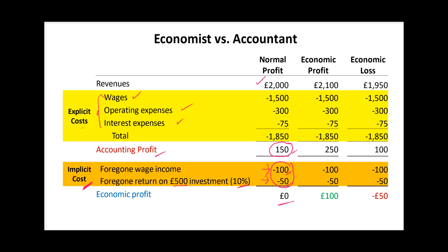An economic profit of zero doesn't mean no profit. It simply means that the accounting profit is covering their opportunity costs — their forgone earnings. It's just enough to stay in business. When economic profit is zero, the person is indifferent between working for the larger organization or running their own practice. In economic literature this is called normal profit, or zero economic profit.